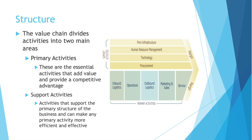The value chain itself divides activities into two main areas: primary activities, which are the essential activities that add value and provide a competitive advantage — this should be your core business — and then support activities, which are secondary activities that support the primary structure of the business and can make any primary activity more efficient and effective.